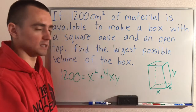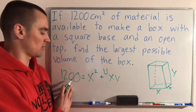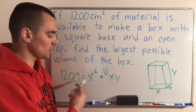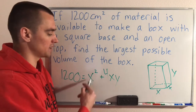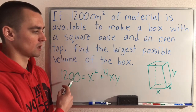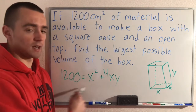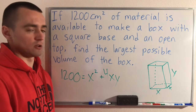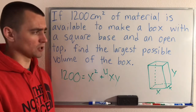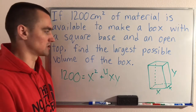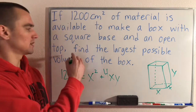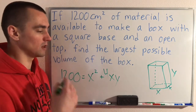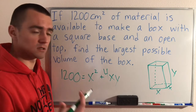We don't have to worry about the top because it's an open top. Since we have 1200 units of material available, we know that all this has to add up to 1200. So x squared plus 4xy equals 1200 — this is our restriction equation. Now what we also want to do is think about what function we're going to be making as large as possible. It tells us that we want to find the largest possible volume of this box, so the equation that we need to maximize is the volume.